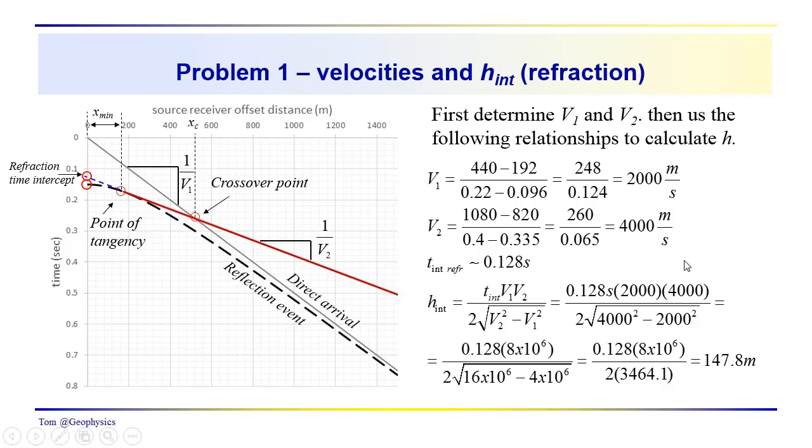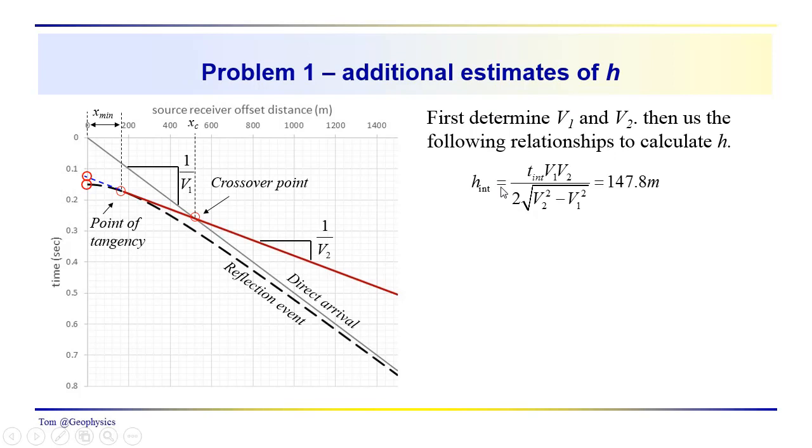So, I think you guys probably got in the ballpark there. For using a different approach, we've already got these velocities. The velocities are, aside from measuring off the different quantities like the minimum distance or the crossover point, the basic data that we use in order to calculate the thickness of the layer. So, we've got a thickness of 147.8.